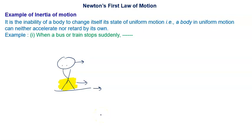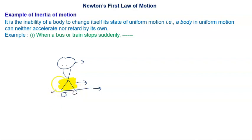Now when the driver applies the brakes, the bus comes to rest, the floor comes to rest, and the lower part comes to rest — but the upper part stays in motion. That's why a person sitting or standing inside the bus falls forward when sudden brakes are applied.